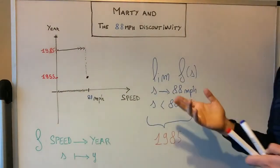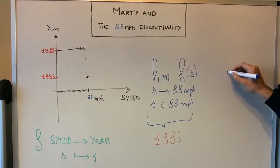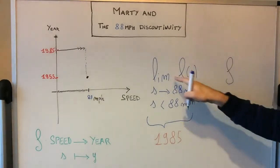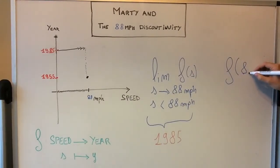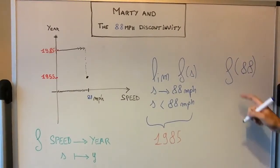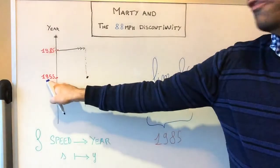So the point is to say that it's a discontinuity because if I compare that limit to the actual value at 88 mph, the actual value of the year for 88 mph is 1955.